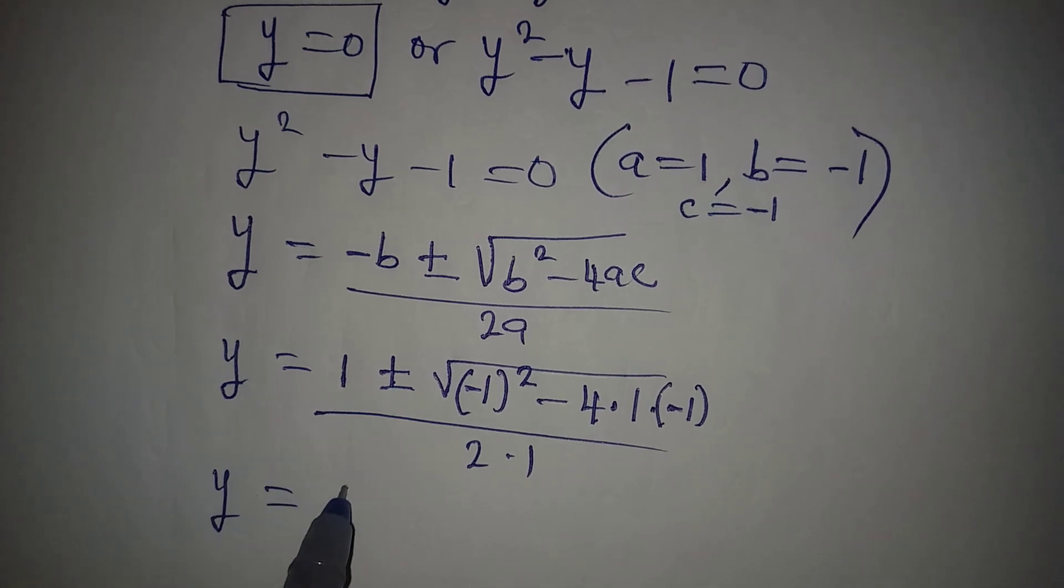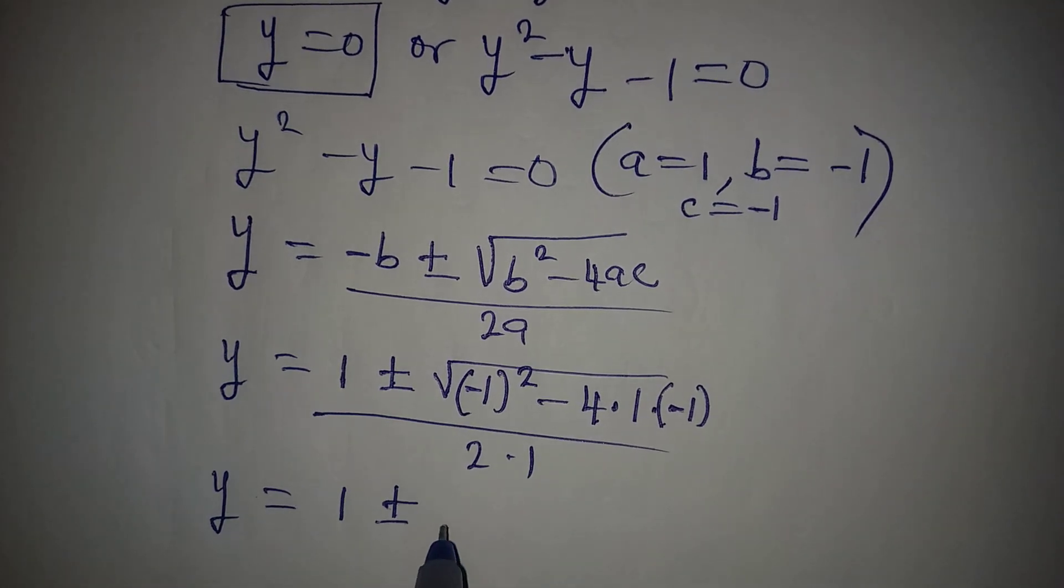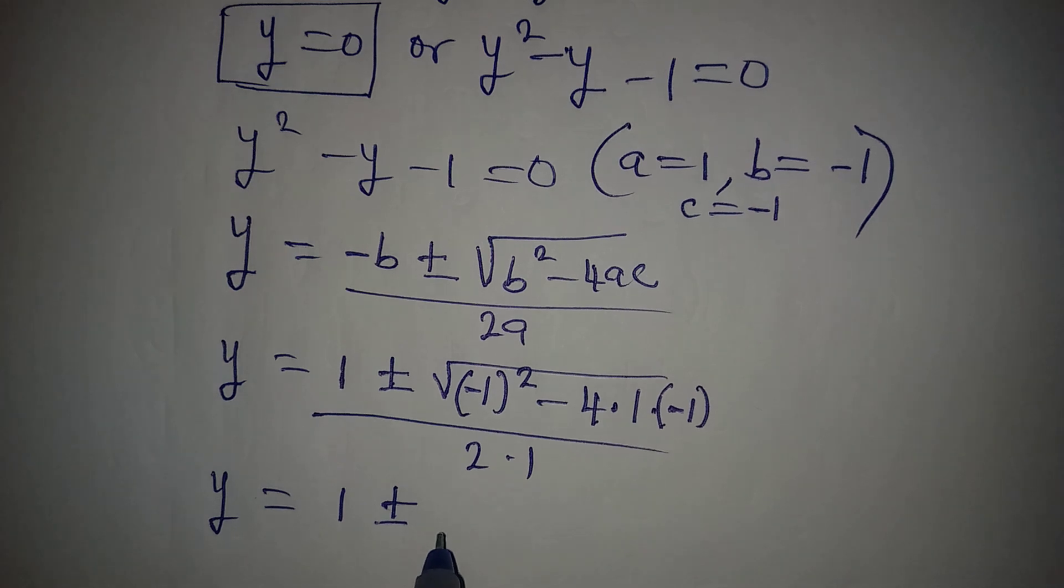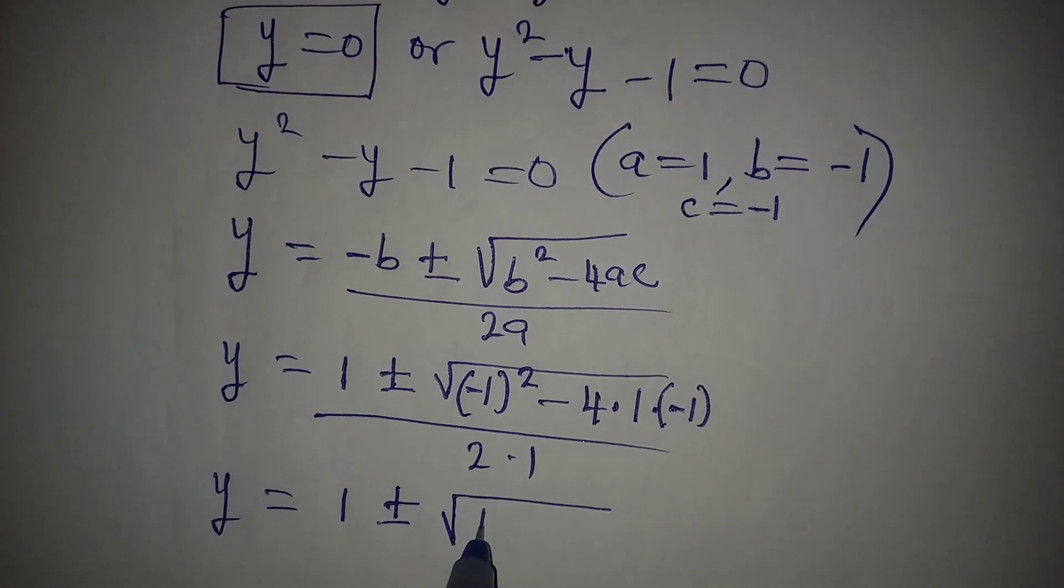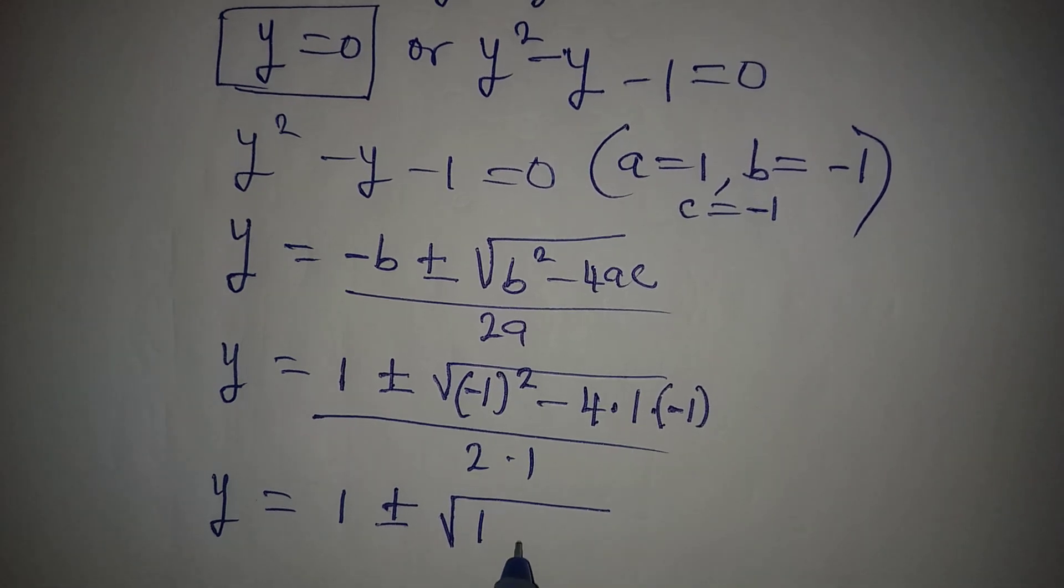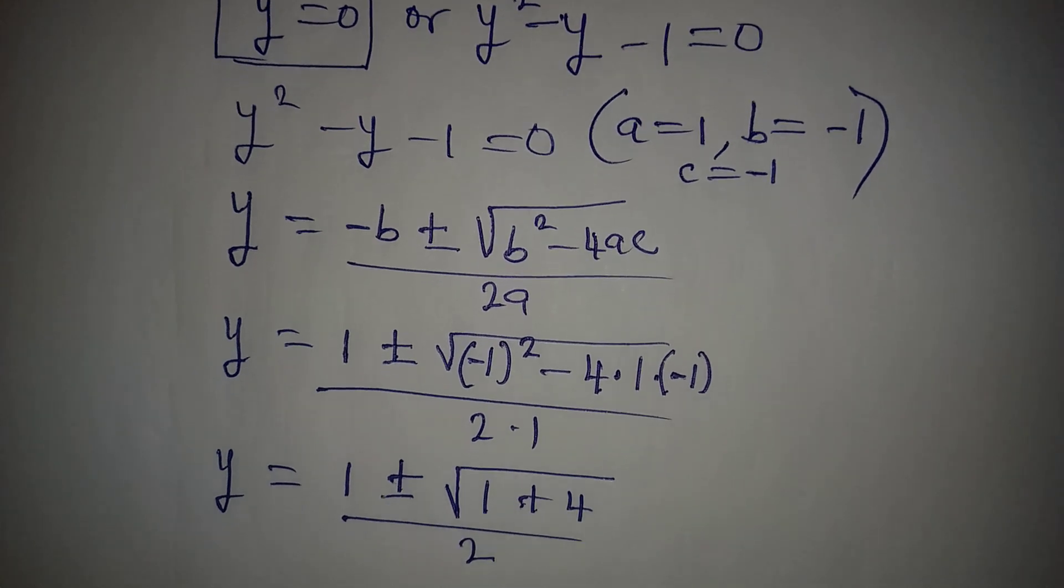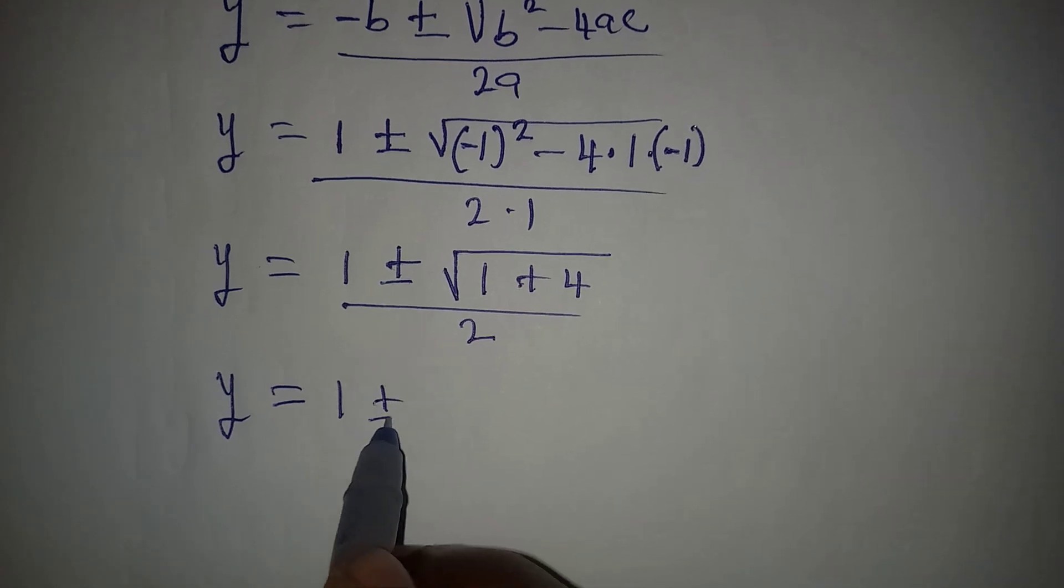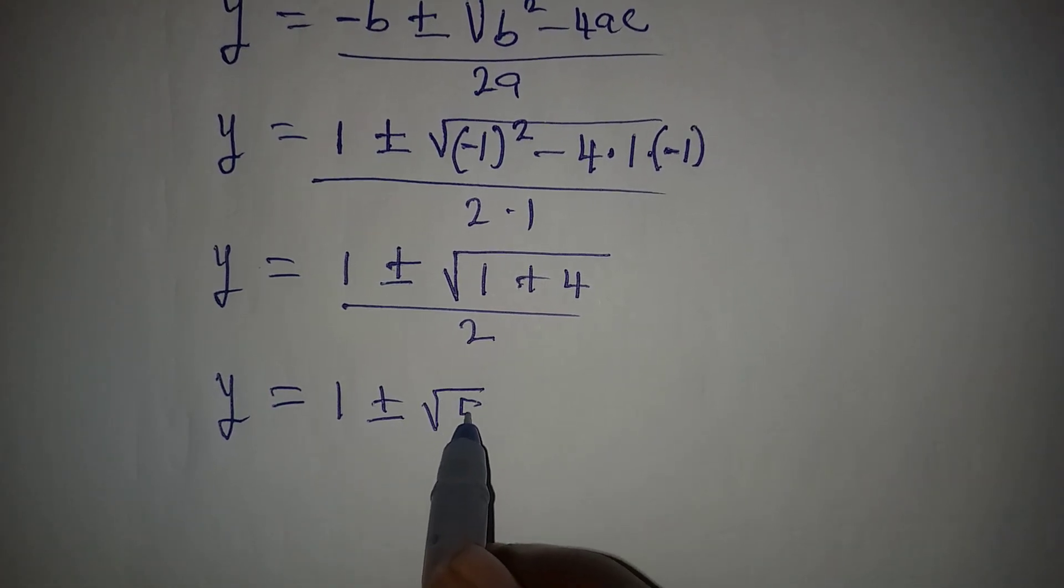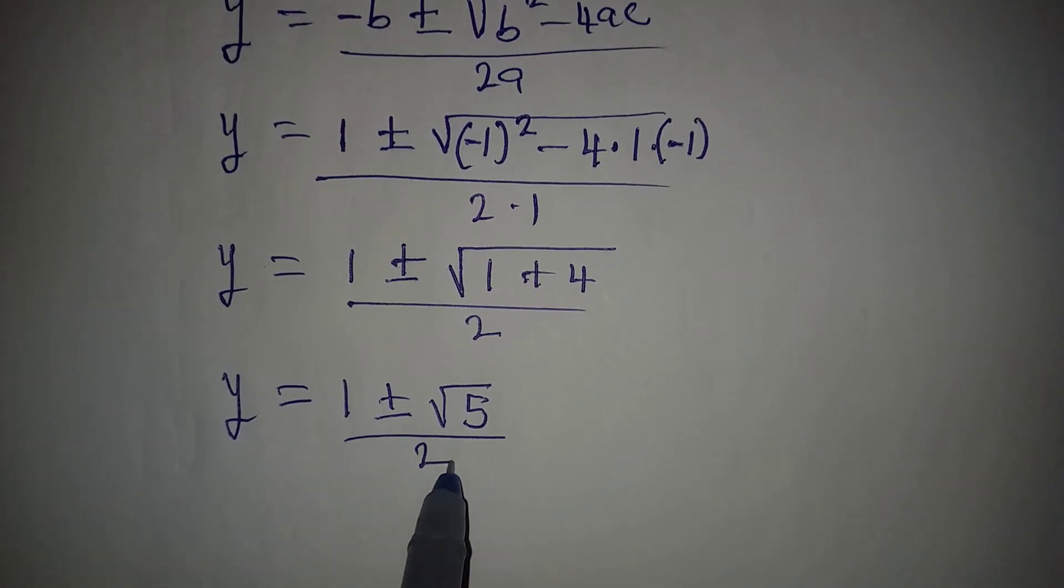y from here is 1 plus or minus, then we shall have 1 squared is 1, 4 times 1 times minus 1 will give plus 4, and this is over 2. If we continue, we have y to be equal to 1 plus or minus square root of 5 over 2.